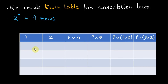First, enter values for the P and Q columns. The P column is T, T, F, F, and the Q column is T, F, T, F. The other columns must be evaluated based on the propositions they contain — either disjunction or conjunction, otherwise known as OR logic and AND logic. A link to learn about logical connectives is given in the description.